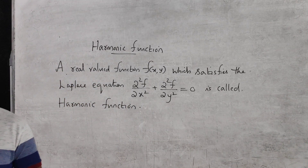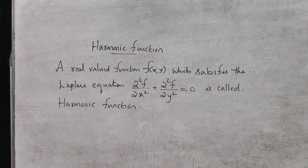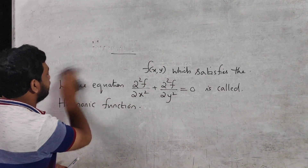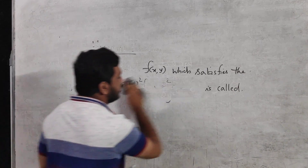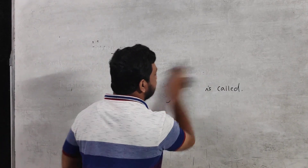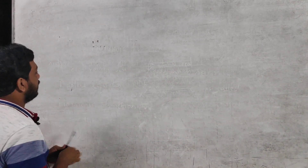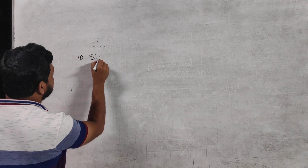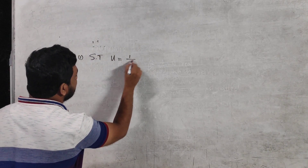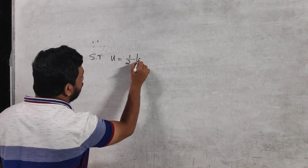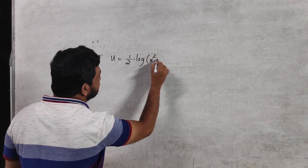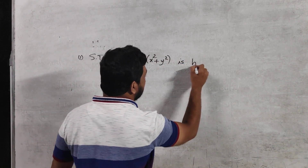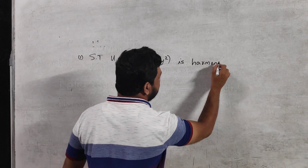So let us start with an example. The first question: show that u = ½ ln(x² + y²) is harmonic.